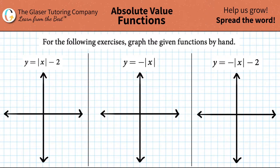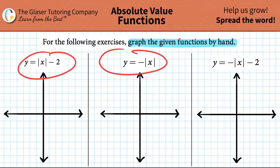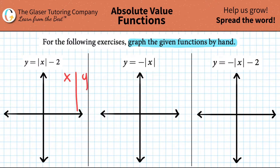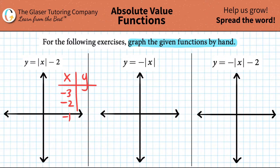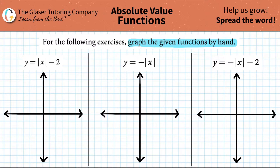For the following exercises, graph the given function by hand. When they tell you this, there are two things we can do. The first thing is we can graph these by doing a chart — label an x and y chart, give yourself numbers for x like negative three, negative two, negative one, zero, one, two, and three, do the math, plug it in for y, and plot those points. We've done that in previous videos.